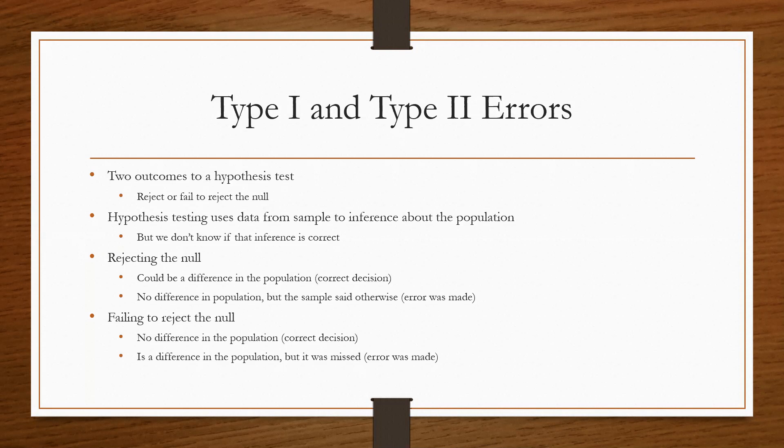When you're rejecting the null, there could definitely be a difference in the population, in which case we made the correct decision by rejecting the null. However, there's also going to be the chance that there's no difference, and so if we reject the null but there really wasn't a difference, then an error was made.